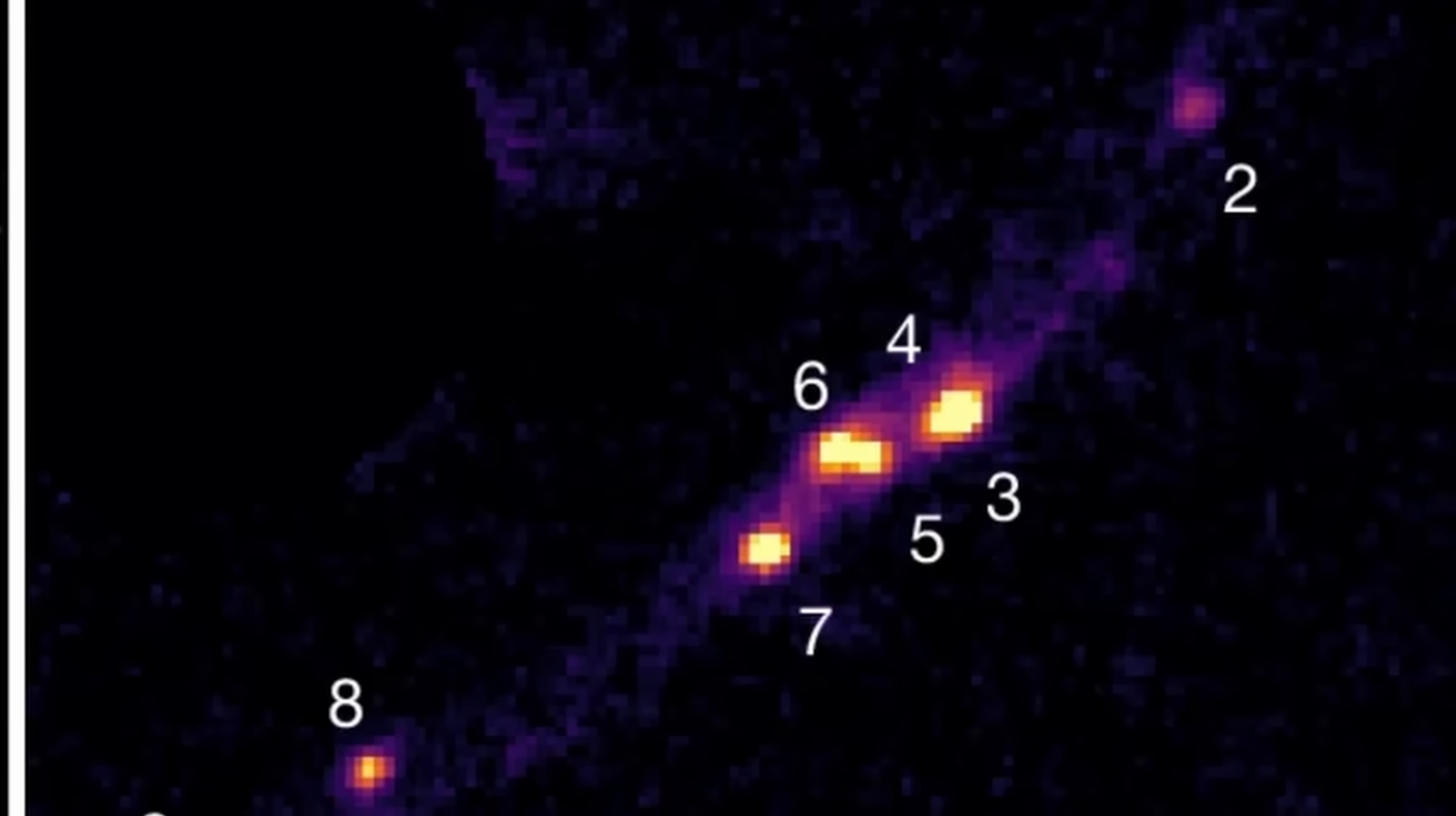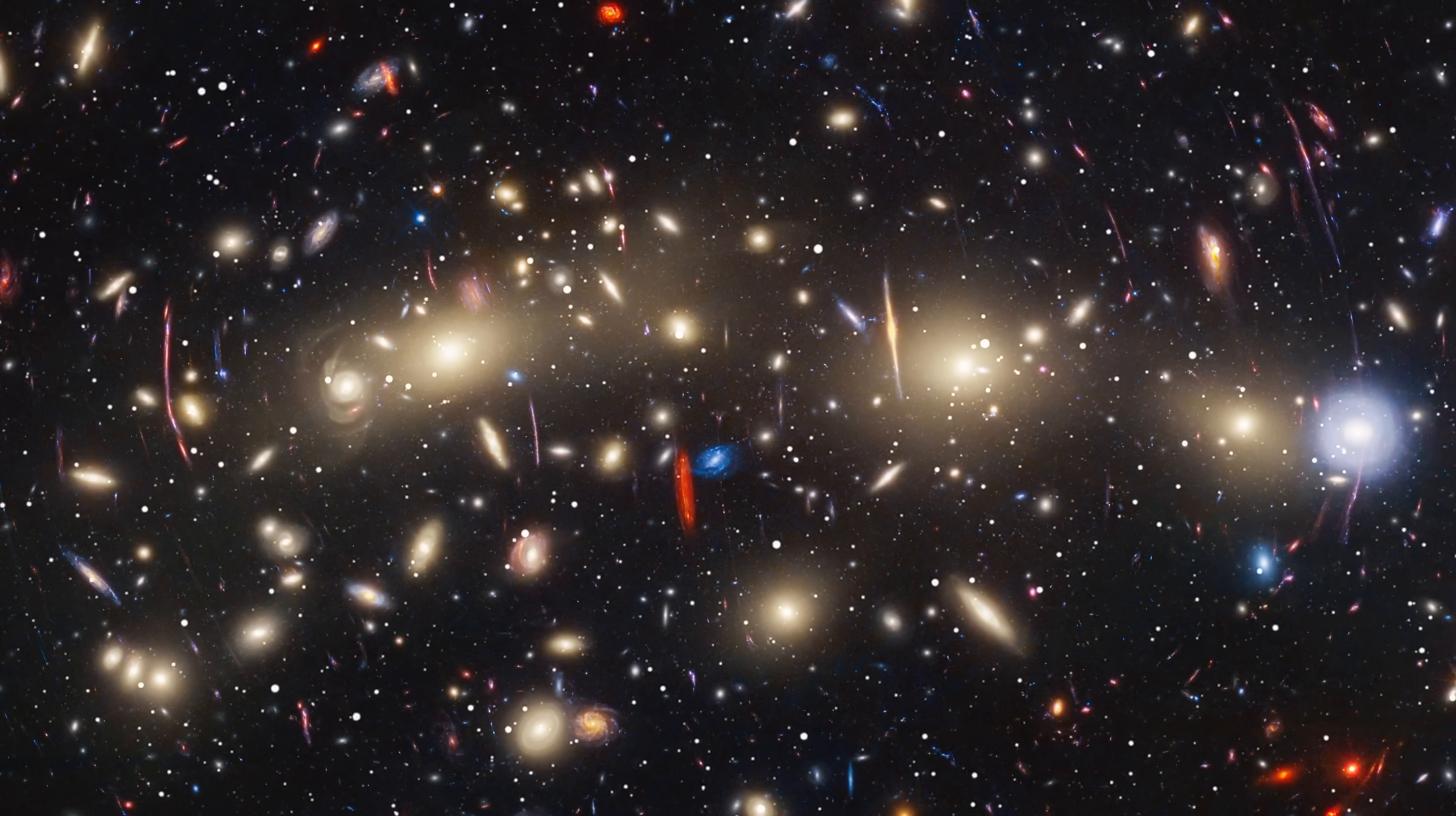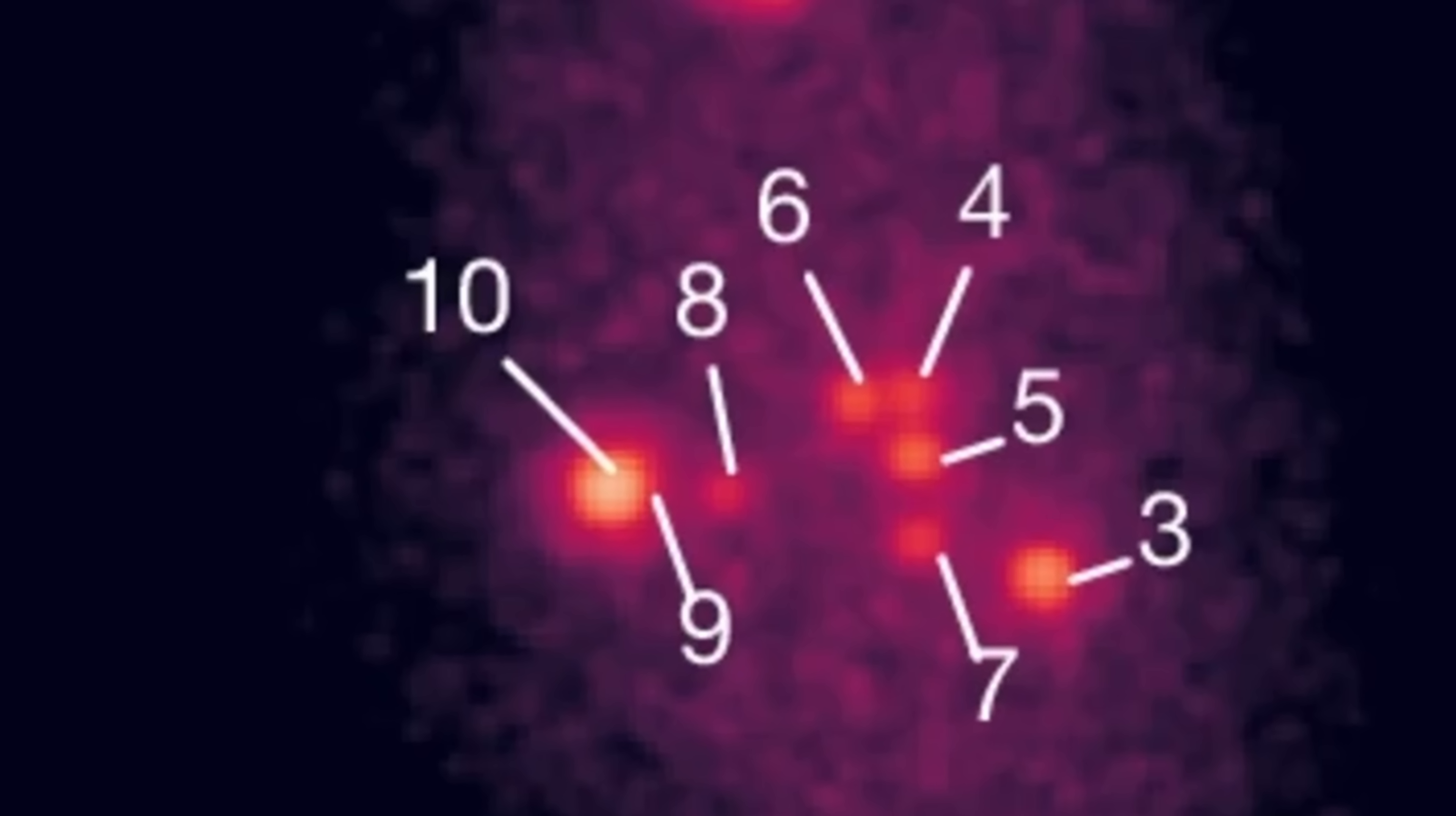James Webb was able to resolve an extremely distant galaxy, approximately 600 million years after the Big Bang or at a distance of 13.1 billion light years, being able to see individual parts only tens of light years across. So this is literally the most detailed and the most accurate observation we've had so far from such a distant place in the universe.